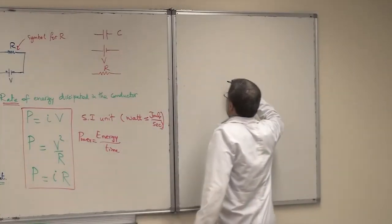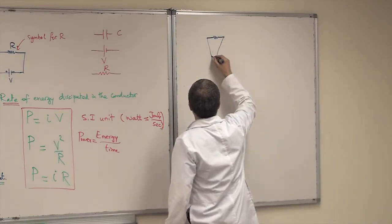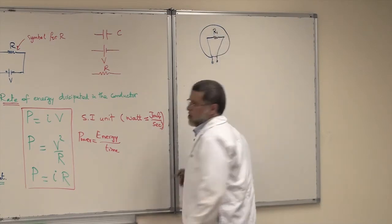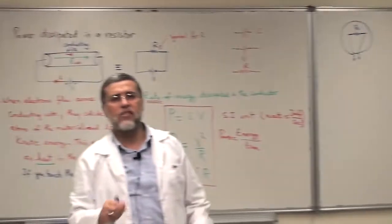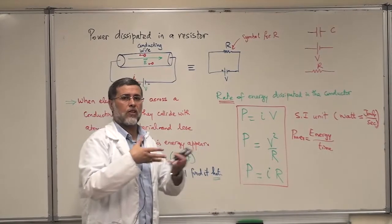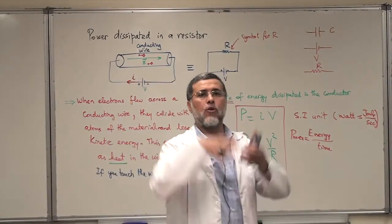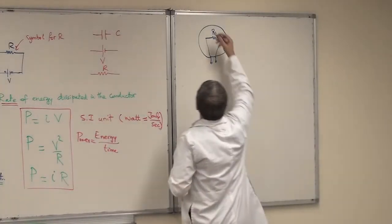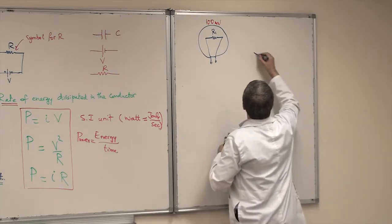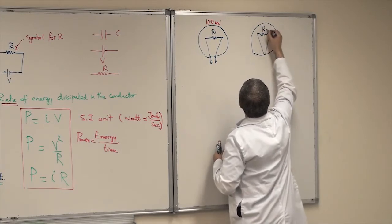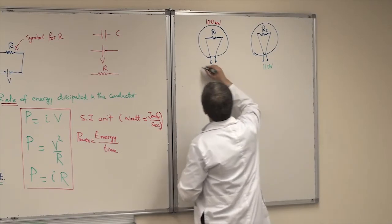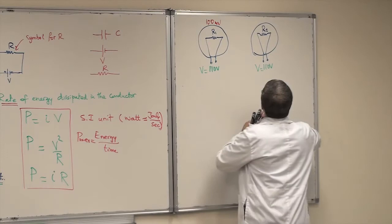Let me give you two conceptual examples to illustrate this. We have a light bulb with resistance R1 — the wire inside is made of tungsten, which glows when it becomes hot due to electron-atom collisions. This bulb is rated 100 watts. Next to it we have another light bulb with resistance R2, rated 40 watts. Both are connected to 110 volts. The question is: which bulb has the higher resistance?